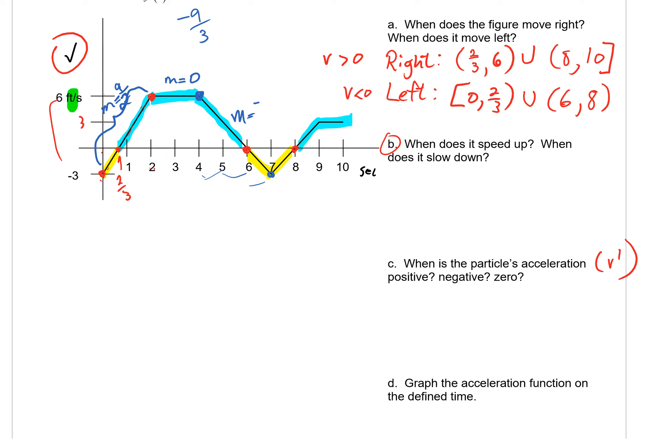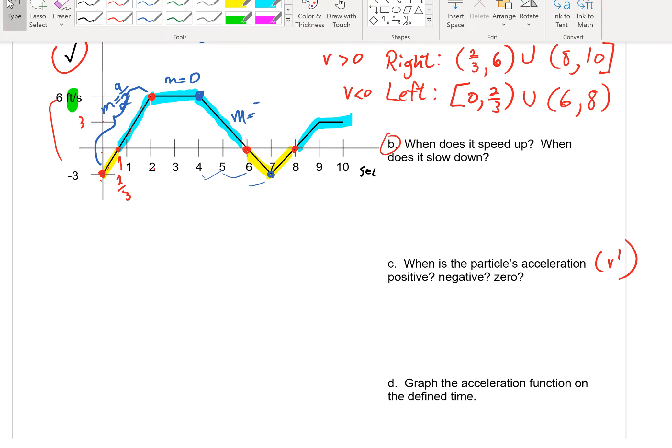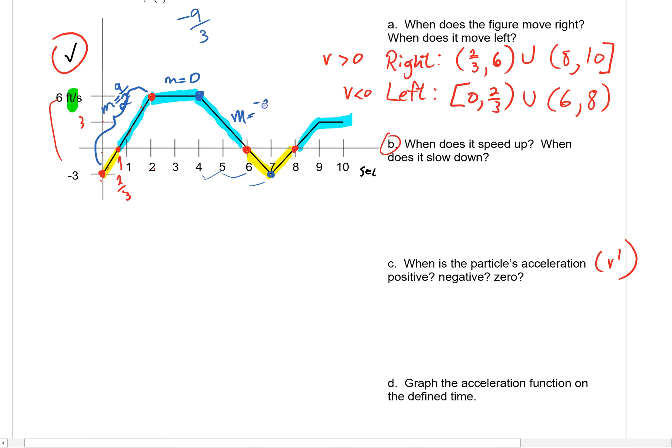Calc BC, we are picking back up with the 3.7 lesson. My apologies. We were right in the middle of saying that this third line segment here between x equals 4 and x equals 7 had a slope of negative 3.